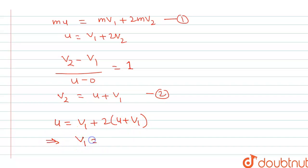So it gives us v1 is equal to u minus 2u, that is minus u upon 3. v1 plus 2v1 is 3v1, so minus u upon 3. This is the velocity of neutron. Negative sign indicates that the velocity will be opposite to the direction mentioned.